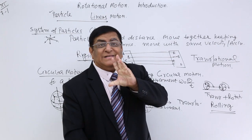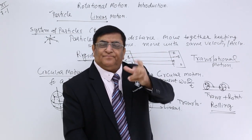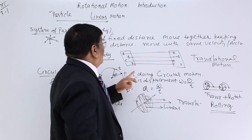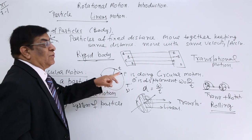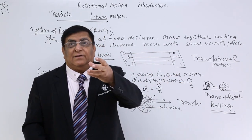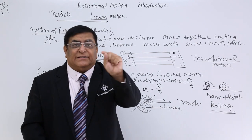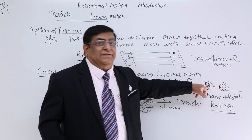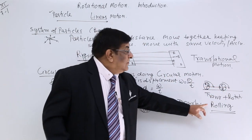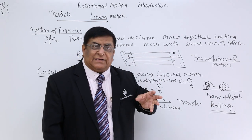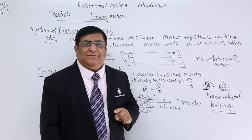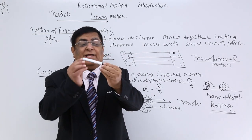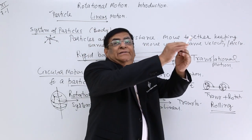A single particle basically cannot rotate. It has to make a circle, so it will make circular motion. A single particle has no diameter, and if it has no diameter it cannot rotate in the rolling sense. So rolling motion must be performed by a system of particles. Minimum two particles are required for rolling motion.